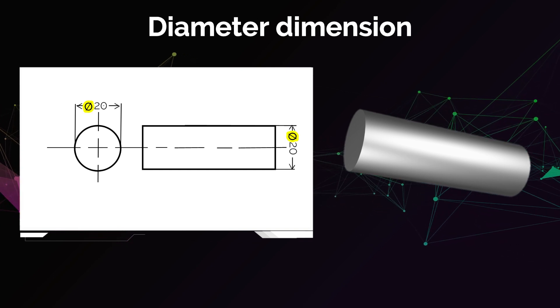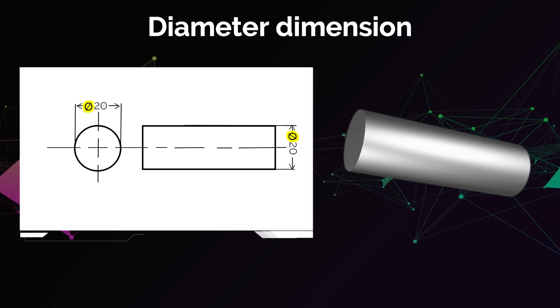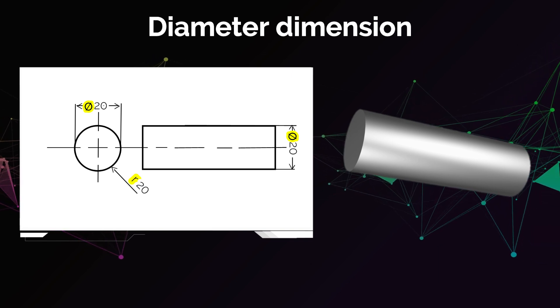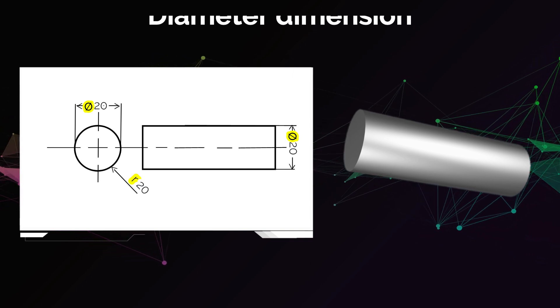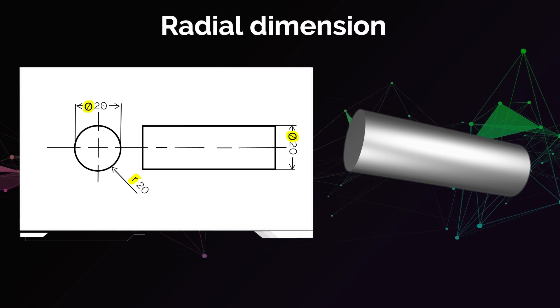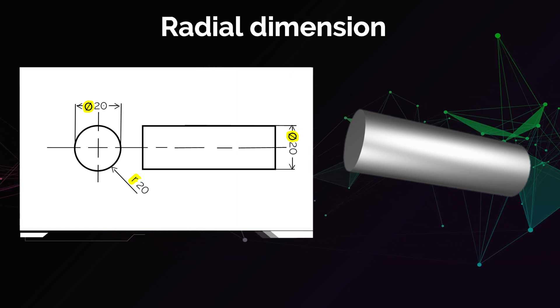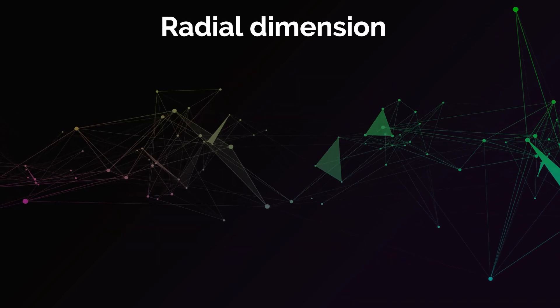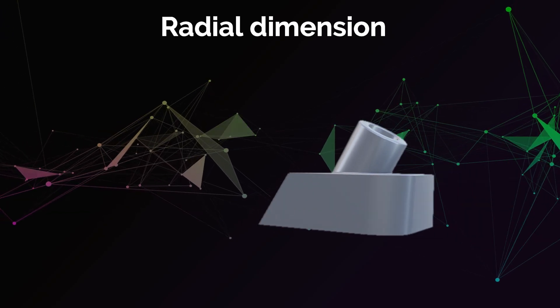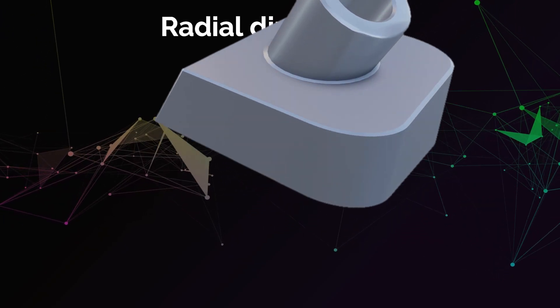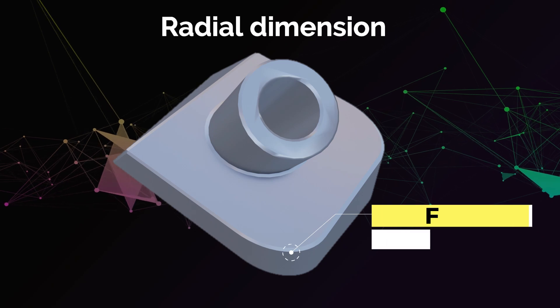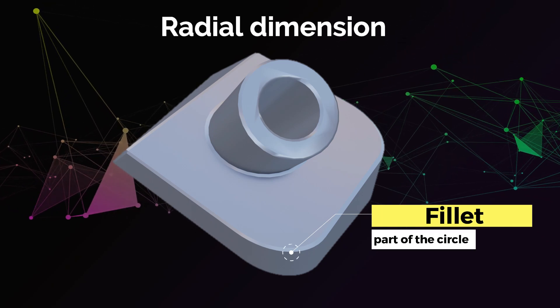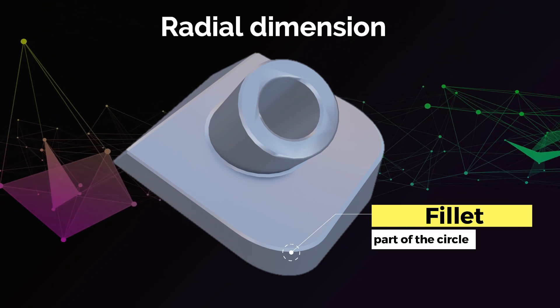But there's another way to dimension circular features, which is to describe the radius of the feature instead of the diameter. In that case, this is a radial dimension, and it has to be noted with the letter R instead of the diameter sign. This is more commonly used when the circular feature is not a complete circle. For example, you have a fillet on the edges of the part. In that case, you only have part of the circle and not the complete circle.